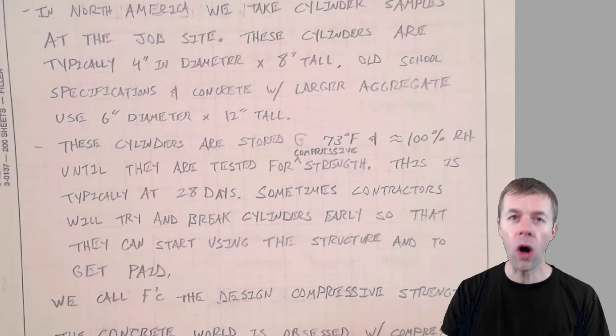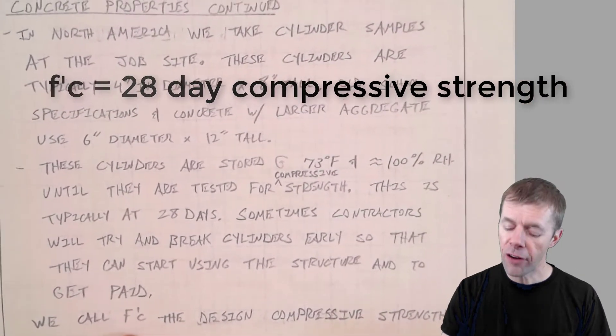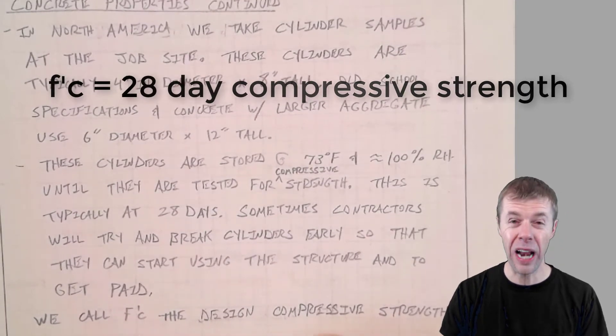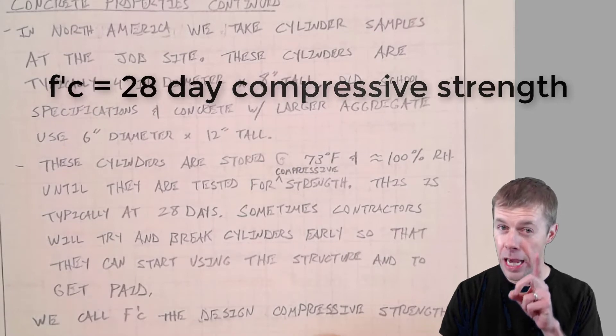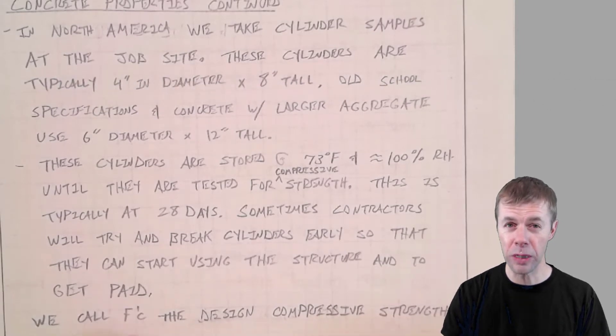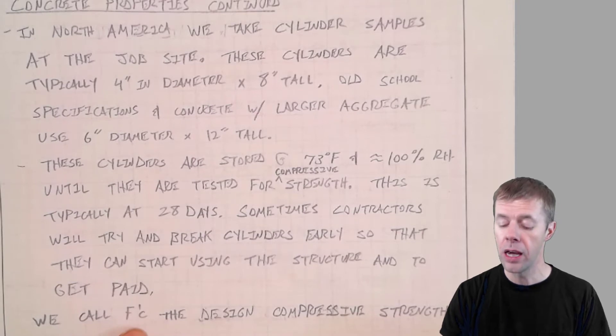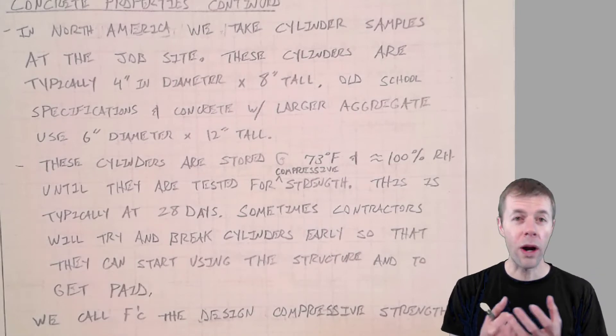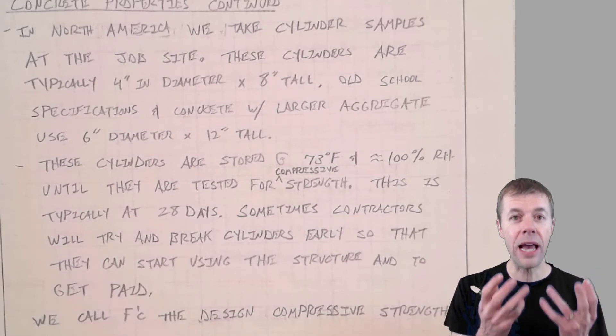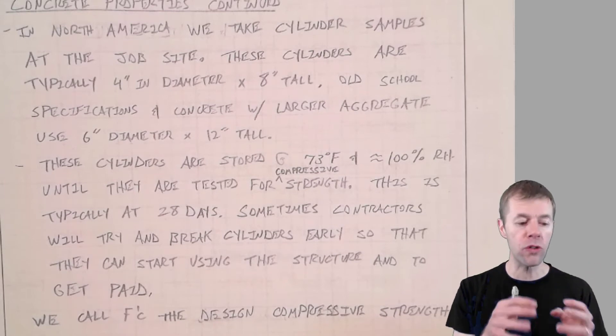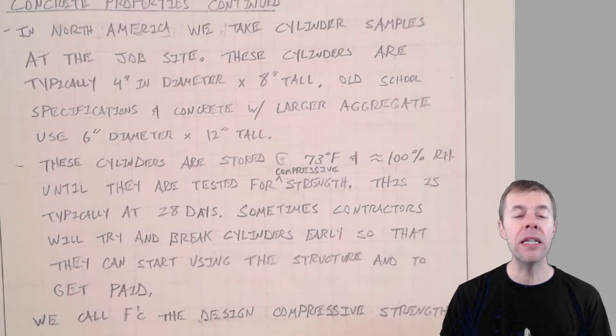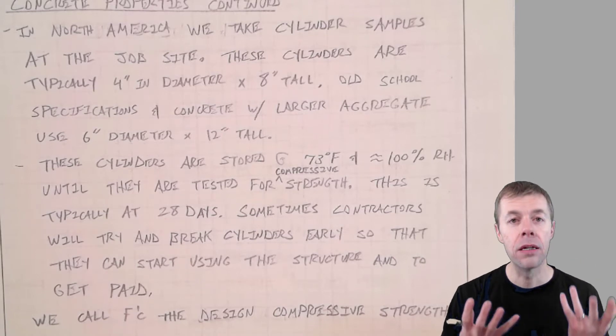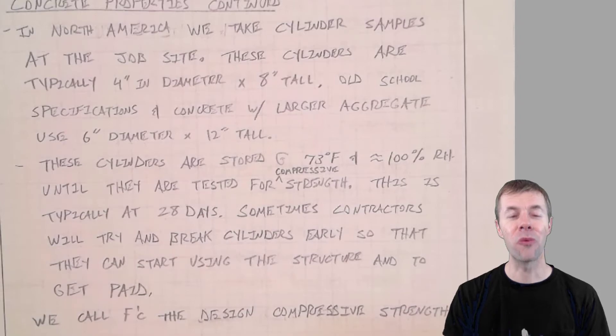And we call F prime C, the design compressive strength of our concrete. And that's typically 28 days. F prime C means 28 days, but it doesn't have to be. You could use another day. You could use 60 days, right? You could require something in seven days. Heck, if you wanted to open up a structure really early, if you had a patch, you might need some kind of strength in like four hours, or one day. It really just depends on what you need.